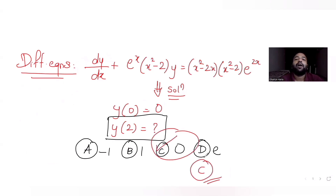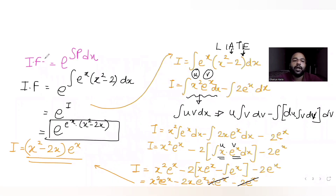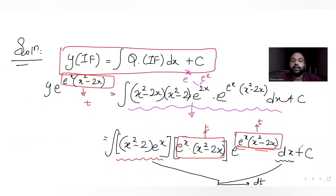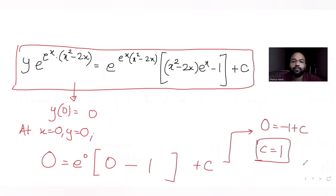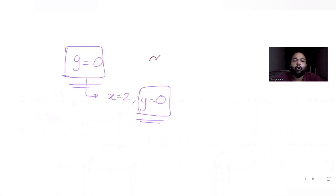To summarize: we compared the equation with the general form dy/dx + Py = Q, found P and Q, computed the integrating factor, solved the differential equation, applied the condition y(0) = 0 to get c = 1, then substituted x = 2 to get y = 0. Option C is the correct answer.